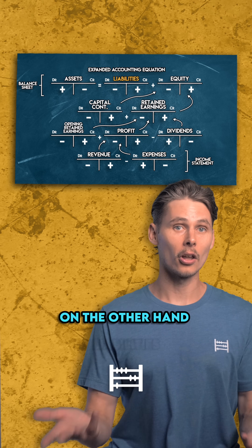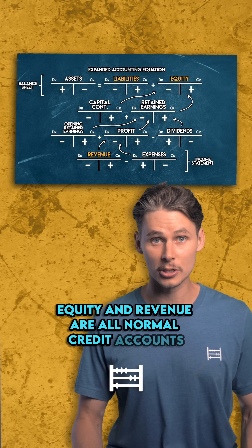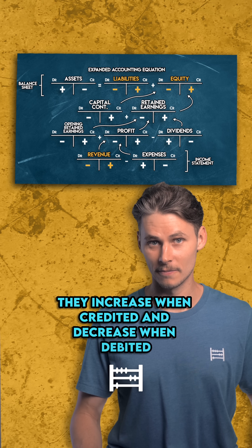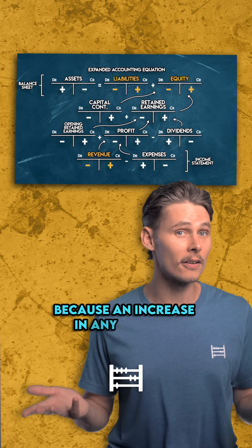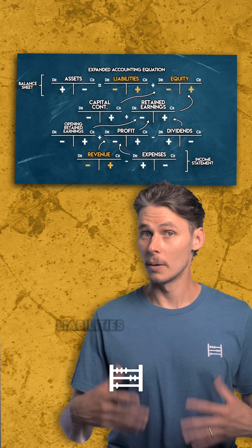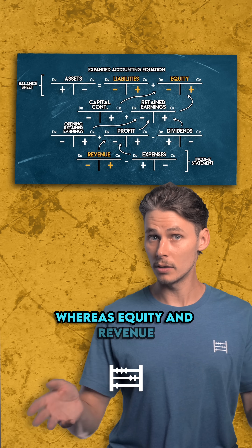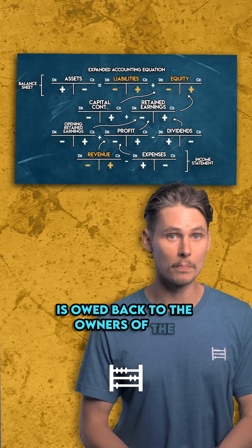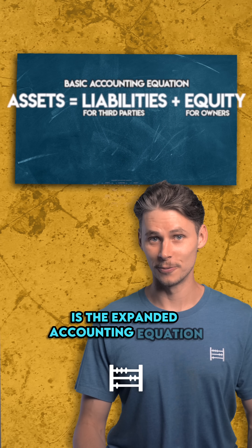On the other hand, liabilities, equity and revenue are all normal credit accounts. They increase when credited and decrease when debited. They're normal credit accounts because an increase in any of them increases the stuff that a business owes. Liabilities are owed to third parties, whereas equity and revenue — which is a component of equity — is owed back to the owners of the business. That is the expanded accounting equation.